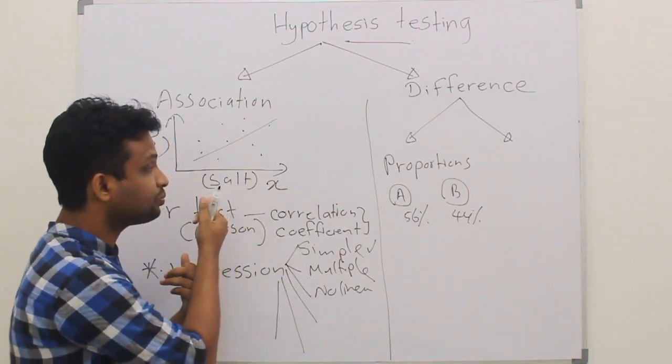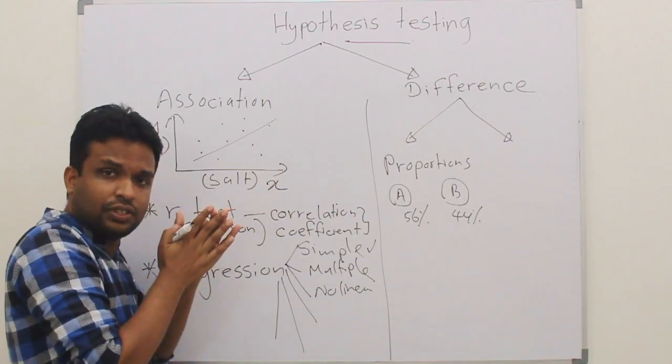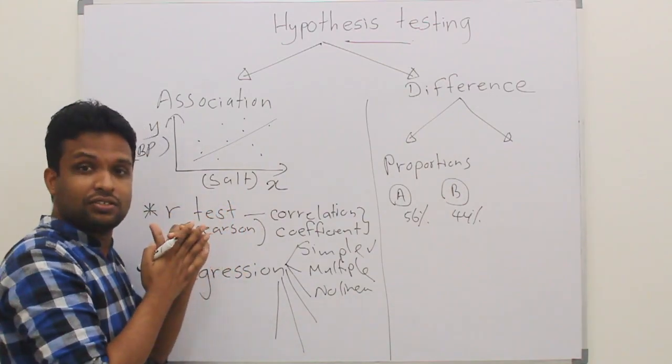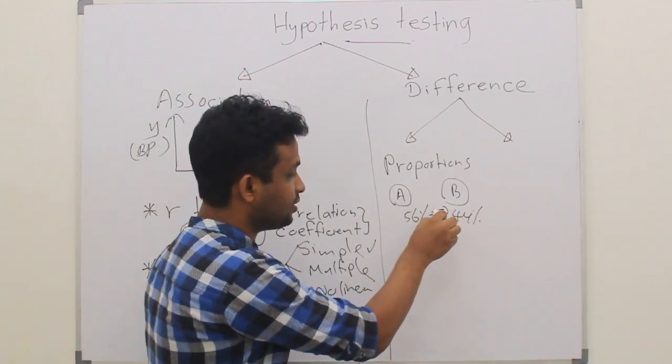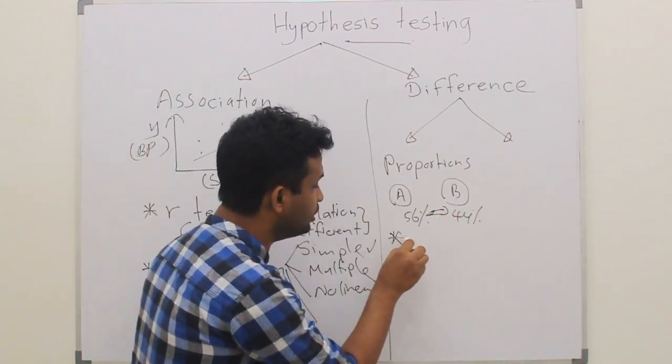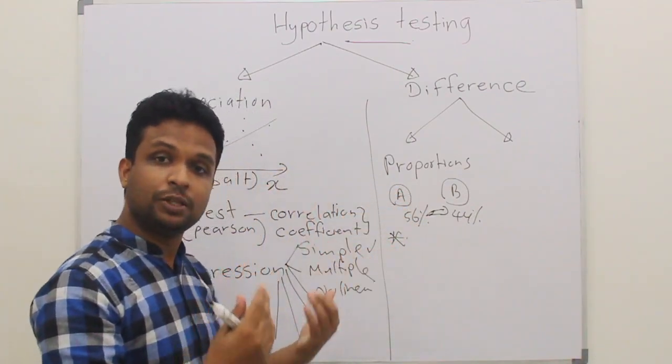But here, we are not testing the difference. We are testing whether there is an association. Here, we are testing whether there is a difference. What are the tests available to test the significant difference between the proportions?